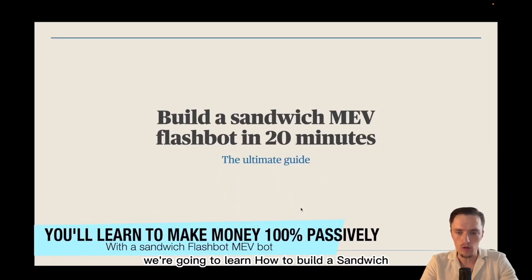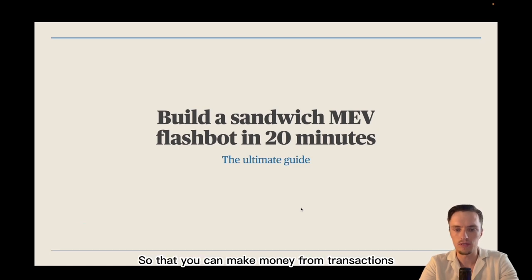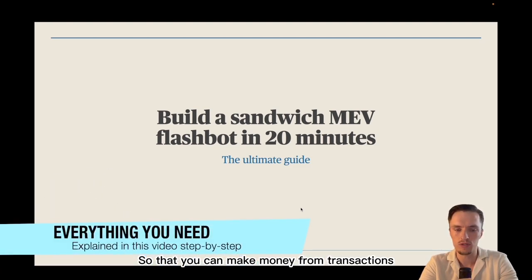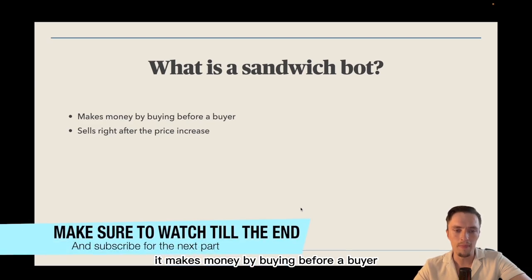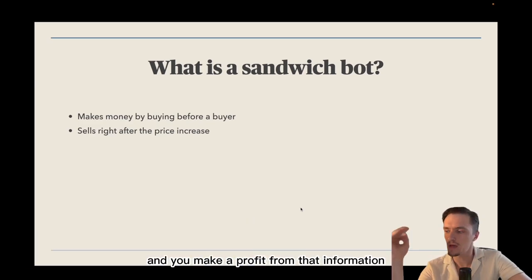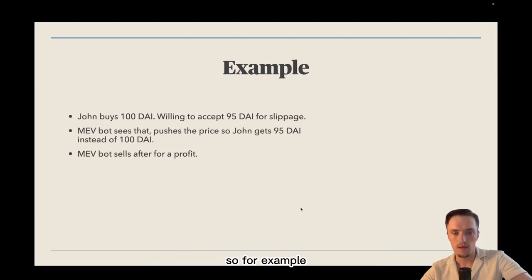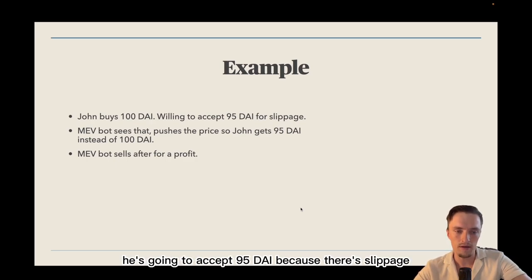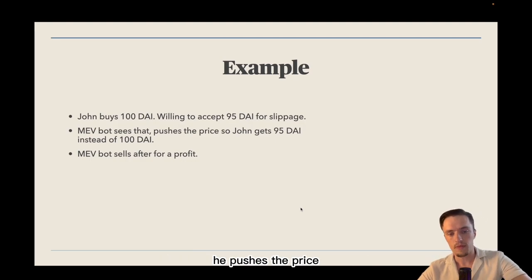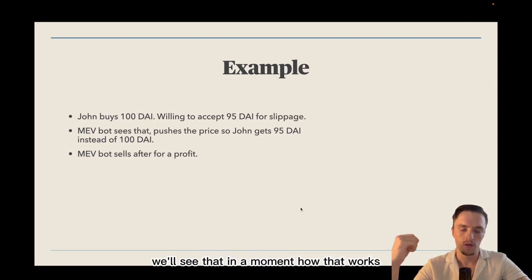Welcome to another tutorial. In this video we're going to learn how to build a sandwich frontrunner MEV flashbot in 20 minutes so that you can make money from transactions completely passively. A sandwich bot makes money by buying before a buyer — you see a transaction where someone buys DAI, and you make a profit because you buy before them and sell after the price increase. For example, John buys 100 DAI, he's willing to accept 95 DAI due to slippage, then the bot sees that in the mempool, pushes the price so John gets fewer tokens, and then sells for a profit.